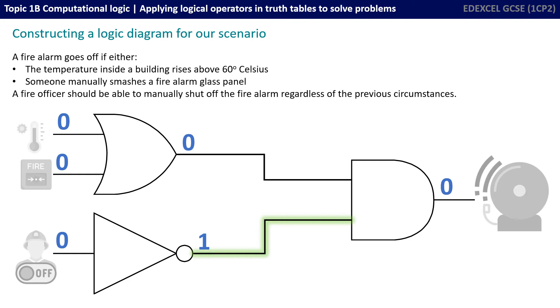The fire officer also is inputting a zero. Of course, that means the NOT gate then flips a one out the other side. But that's absolutely fine because the fire alarm only goes off if both those gates are active.